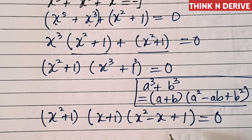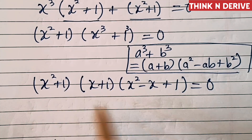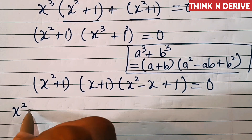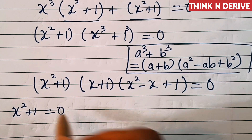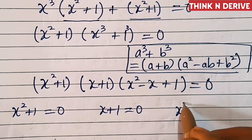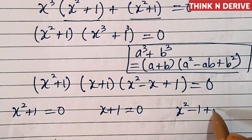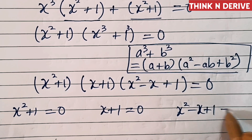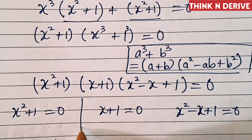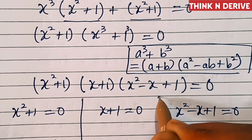This expression is the factored form of the equation. Since it equals 0, either of these factors must equal 0. That is, either x² + 1 = 0, or x + 1 = 0, or x² - x + 1 = 0. These factors will give us the solutions.